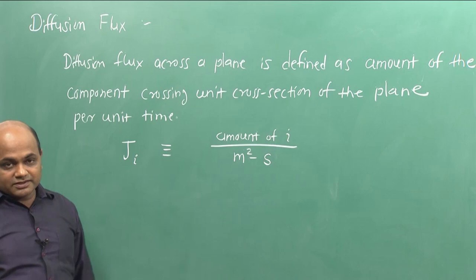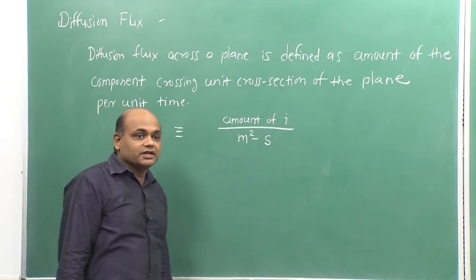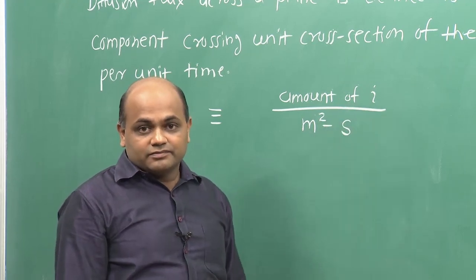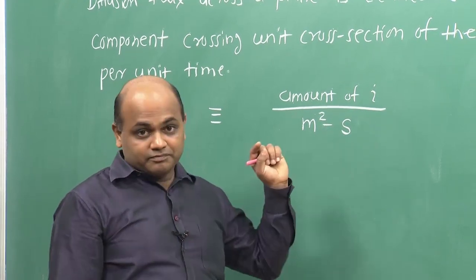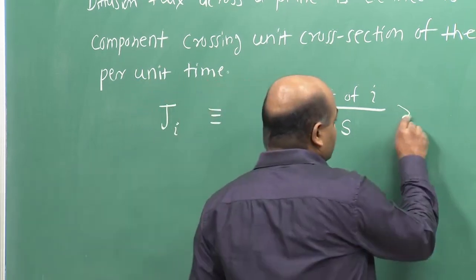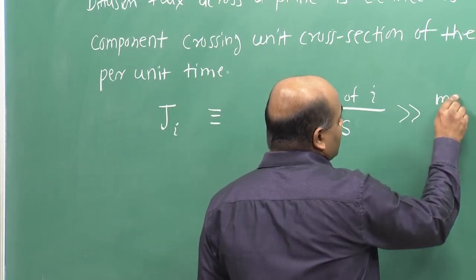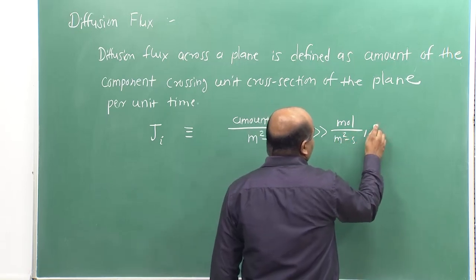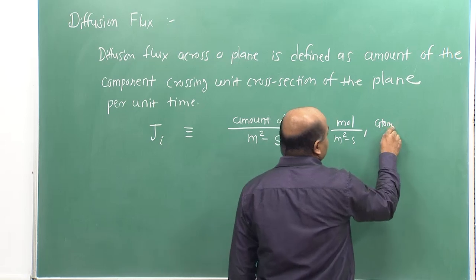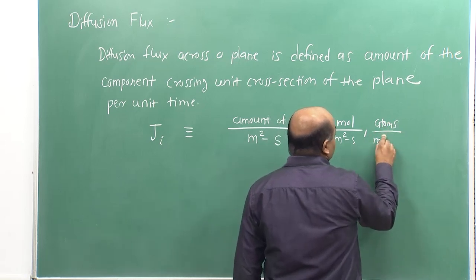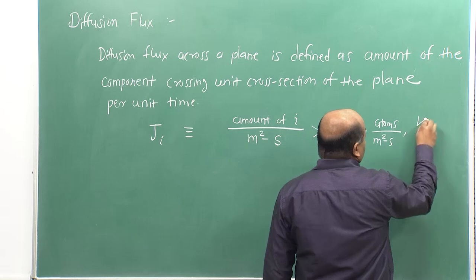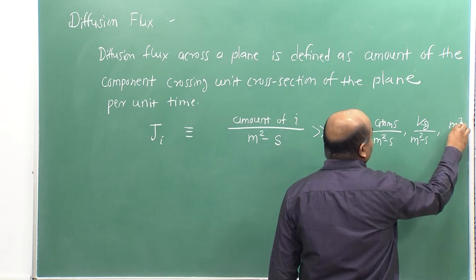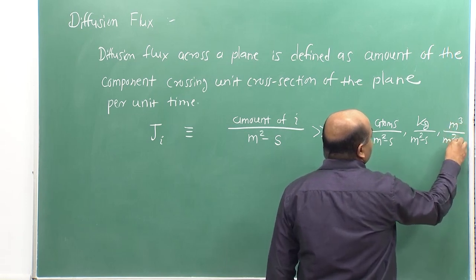The amount of i can be expressed in various units: in terms of number of moles, number of atoms, weight, or even volume. So the various units of flux can be number of moles per meter squared per second, number of atoms per meter squared per second, kg per meter squared per second, or even meter cubed per meter squared per second.